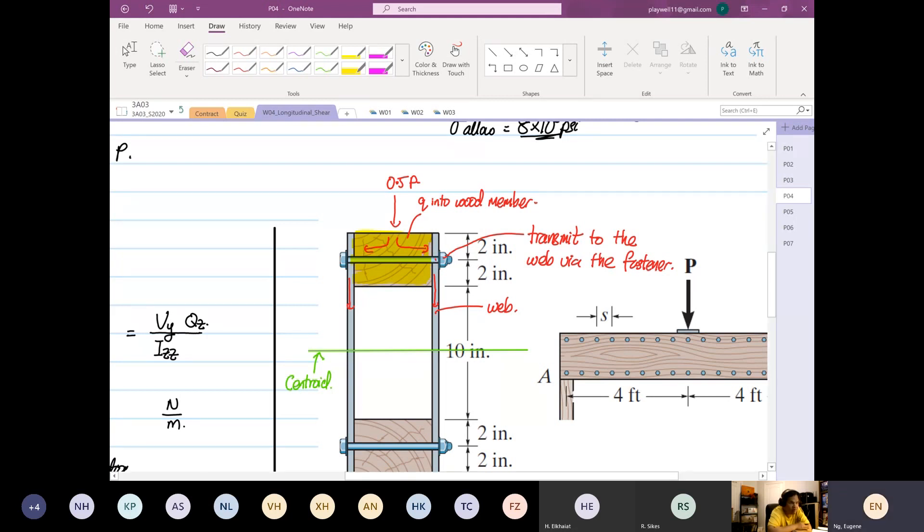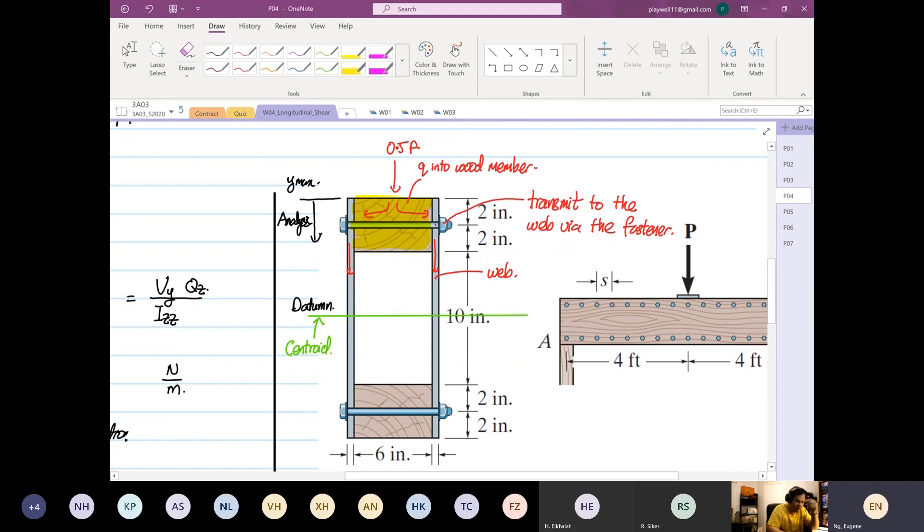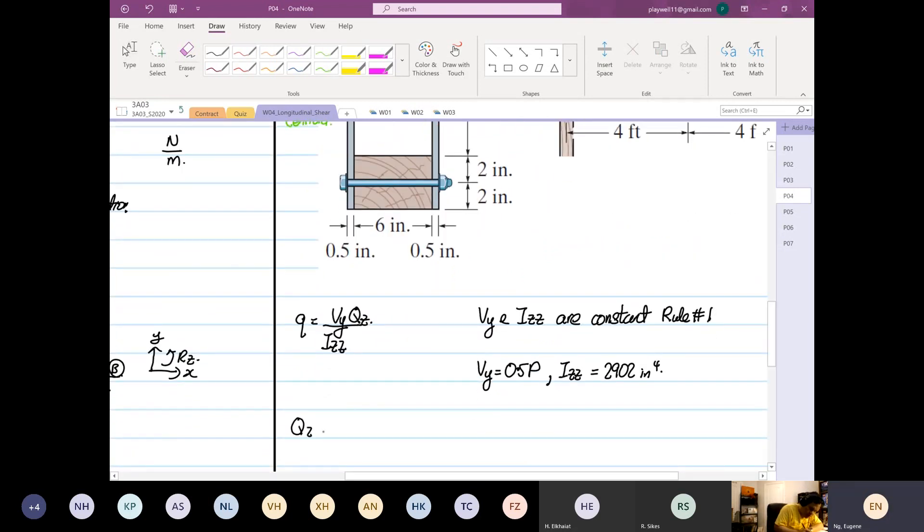Then the shear force will go into the web. So the first moment of area regarding the fastener has to be taken in the wood member only. Consider the wood member. Are we clear? The shear flow Q, the 0.5P will first flow into the wood member first, then it will transmit to the fastener. So if it's going to fail, the first moment of area we're going to take will be the wood member only. Question anyone? Are we okay? I know this is the first time you are seeing this.